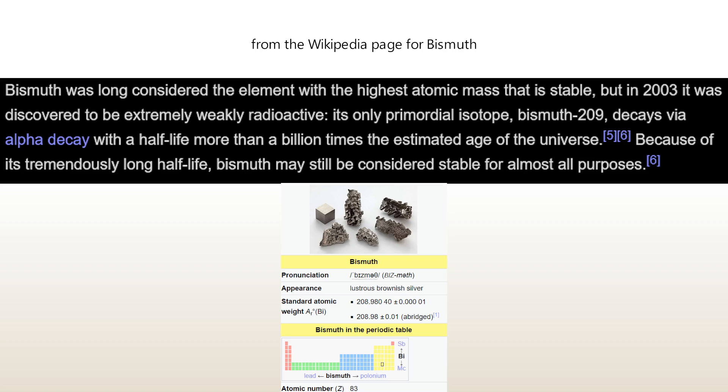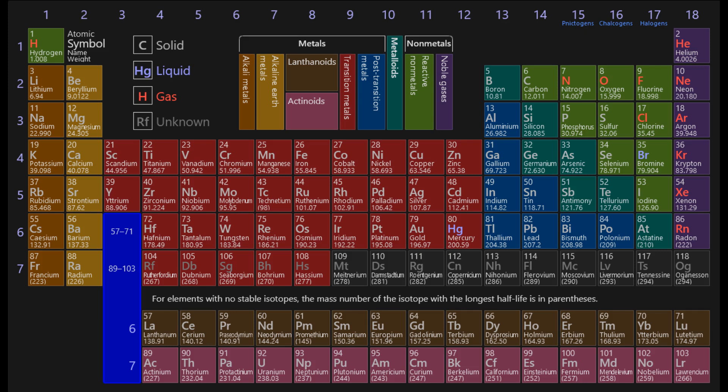Anyway, do we have hope that an undiscovered element could just be a little radioactive and still be stable enough to use? No. At atomic number 100, fermium's most stable isotope has a half-life of just over 100 days. It doesn't get better as you get higher.